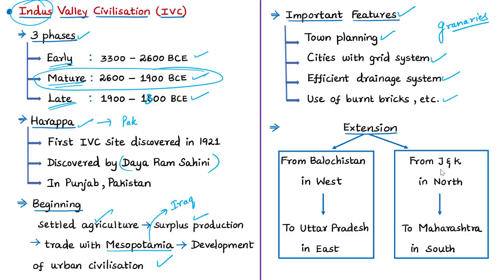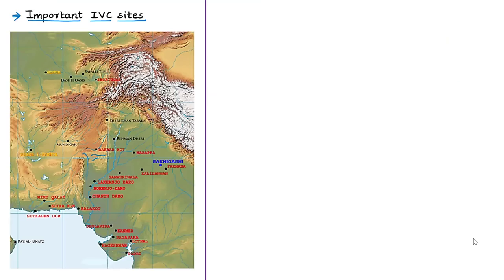There is a common misconception that IVC was limited to western India, but at its peak it extended from Balochistan in the west to Uttar Pradesh in the east, and from Jammu and Kashmir in the north to Maharashtra in the south. Important IVC sites include Harappa in Pakistani Punjab, Mohenjodaro in Pakistani Sindh, Dholavira in Gujarat, Kalibangan in Rajasthan, and Banawali and Rakigadi in Haryana.